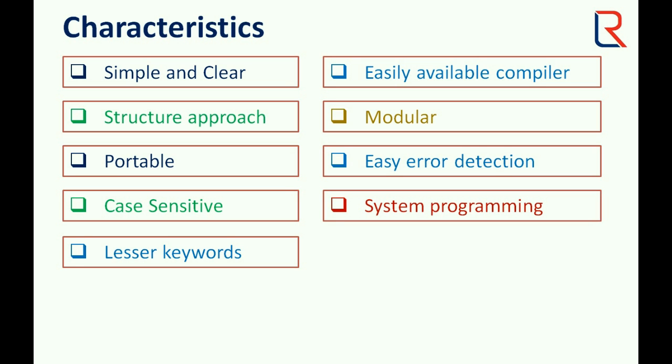System programming. C has the capability to make system software easily because C has bitwise operators which can manipulate CPU registers also.